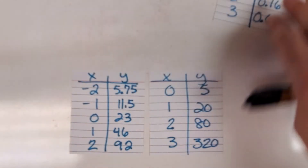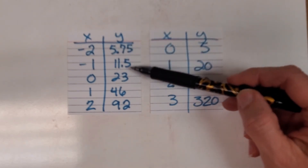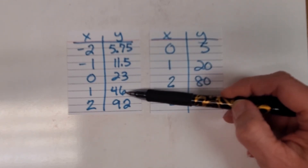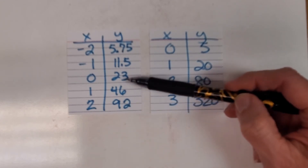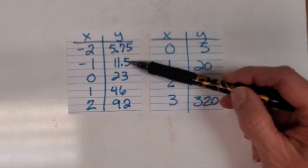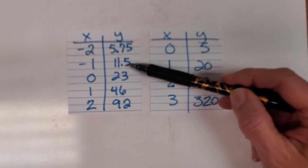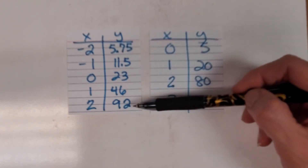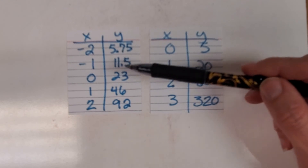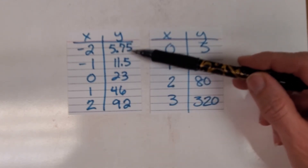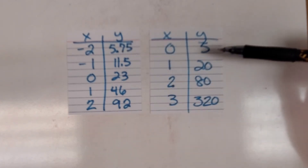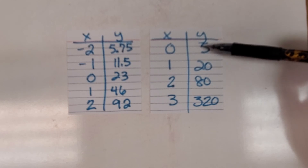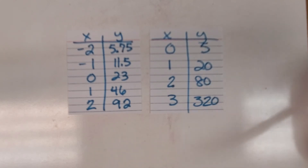Looking at the third table, I notice 23 is half of 46 and 46 is half of 92 — I'm multiplying by 2 each time. Going back: 2 times 11.5 is 23 — yes, doubling each time. That's exponential, and since I'm multiplying by 2, not dividing, it's an exponential growth model. The fourth table: 5 times 4 is 20, 20 times 4 is 80, 80 times 4 is 320 — multiplying by 4 each time, so that's also a growth model.